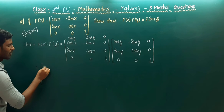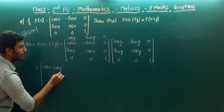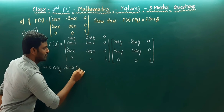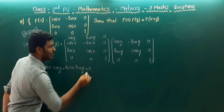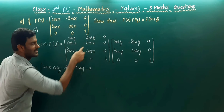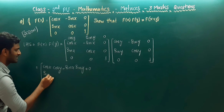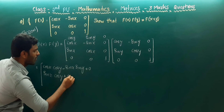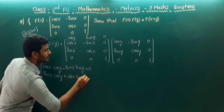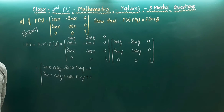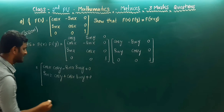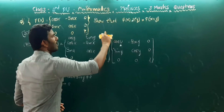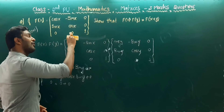So the first column result: cos x into cos y, then plus (-sin x) into sin y, plus 0. For the second row: sin x into cos y, plus cos x into sin y, plus 0. And for the third row, if you are multiplying with 0, the answer is always 0. So the first column is finished.